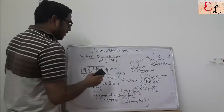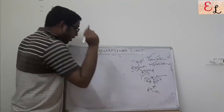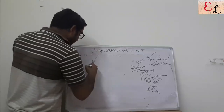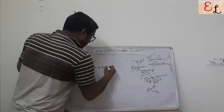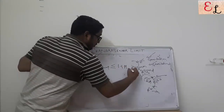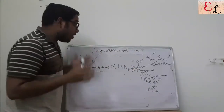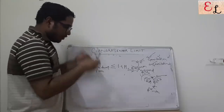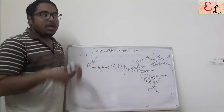This is where the Chandrasekhar limit comes in. Subramanian Chandrasekhar defined that for a white dwarf star to exist and not get converted into a neutron star, the limit is: the mass of a white dwarf star at maximum should be less than or equal to 1.4 times the mass of the sun. That's the maximum mass a white dwarf star can be. If anything is greater than this, it will suffer gravitational collapse and convert into a neutron star. That concludes our discussion on the Chandrasekhar limit.